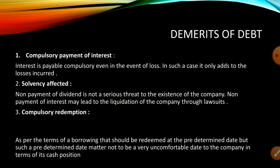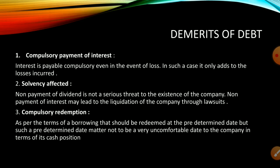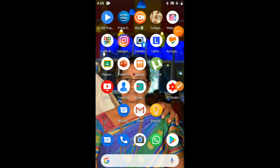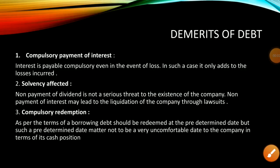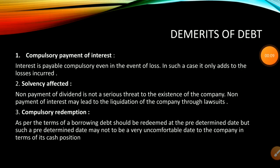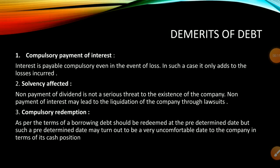The third demerit is compulsory redemption. As per the terms of borrowing, debt must be redeemed at a predetermined date. However, that date may turn out to be very uncomfortable for the company in terms of its cash position — we cannot predict the future. If the company fails to repay the debt amount on the due date, the debt holder can take over the assets of the company.